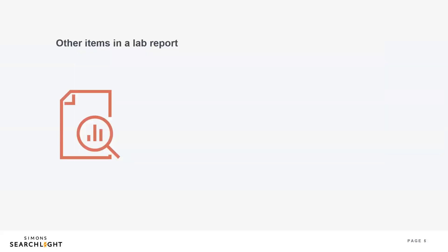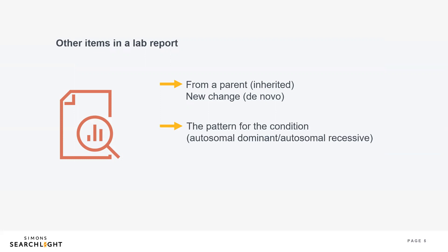There are many other items that can be included on a lab report, like if the gene change was passed on from a parent or if it is a new change not seen in either parent. De novo means new — the change was not inherited from either parent. The report also includes whether the condition is autosomal dominant or autosomal recessive, which tells you how many changes are needed to cause a particular genetic syndrome. One change is autosomal dominant, or two changes is autosomal recessive.